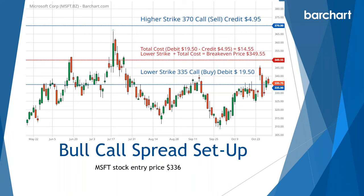Breakeven equals the lower strike plus the cost of the spread — in this case, $335 plus $14.55 gives us $349.55, which I'll round to $350. Maximum profit is the strike differential minus the cost: the difference between the two strikes is $35, the cost is $14.55, so maximum profit is $20.45 per share. Remember, one option controls 100 shares, so all values are multiplied by 100 in real dollar terms.